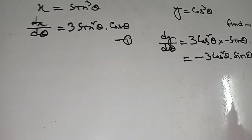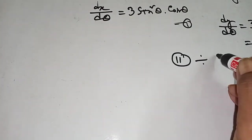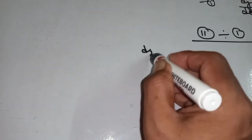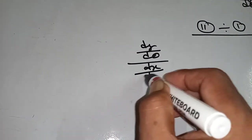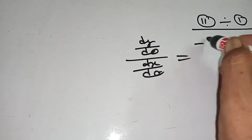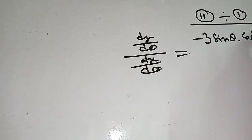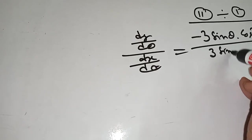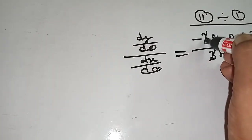So dy/dθ = minus 3 cos²θ · sinθ. This is equation two. Now find dy/dx: that means equation 2 divided by equation 1 — dy/dθ divided by dx/dθ equals minus 3 sinθ · cos²θ divided by 3 sin²θ · cosθ.